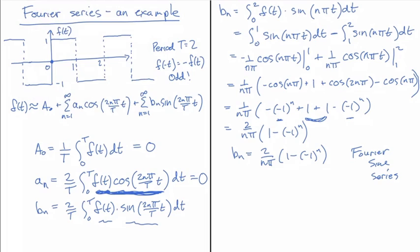So we could also write it in pieces. You'll notice when n is even, this term here is 1. Minus 1 to the n even is 1. So this is 1 minus 1 and I get 0 here when n is even. And when n is odd, this one is minus 1. So it's 1 minus minus 1, which is 1 plus 1, which is 2. So this is 4 over nπ when n is odd.